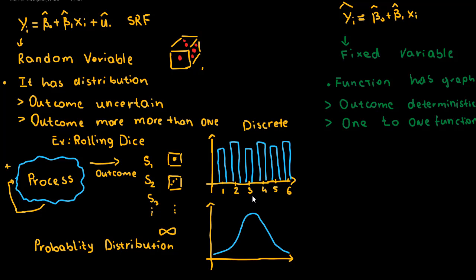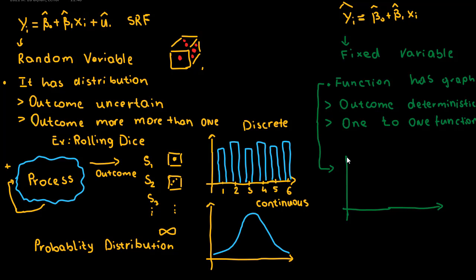This one is the discrete and this one is the continuous probability distribution. When we have a random variable, we should make a probability distribution and draw it. For the fixed variable, the sample regression line has a function because it satisfies the conditions: it is deterministic, exact, and one-to-one. Since it satisfies both conditions we can make a graph, as we know from high school — x is the fixed value.